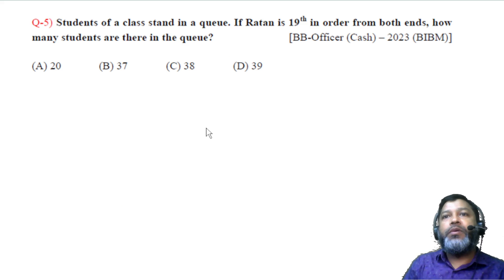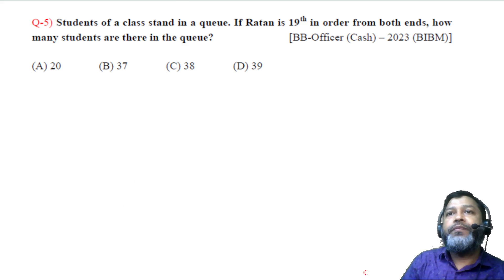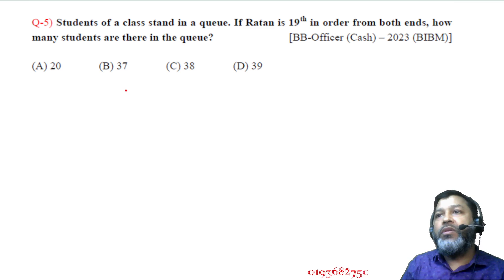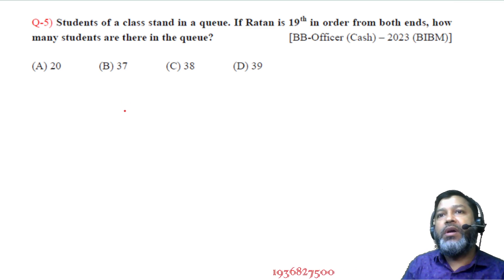Question number 5: Students of a class stand in a queue. If Rathon is 19th in order from both ends, how many students are there in the queue?